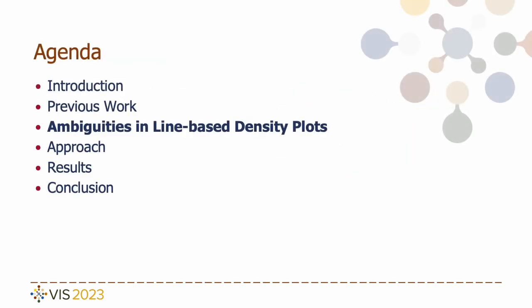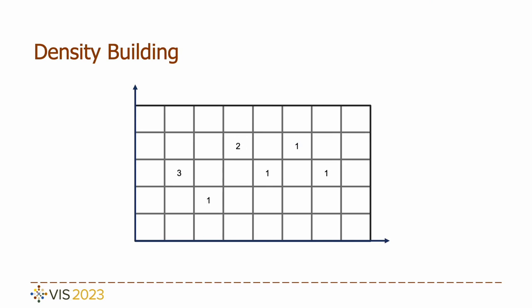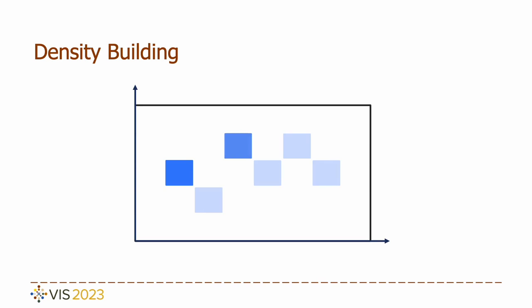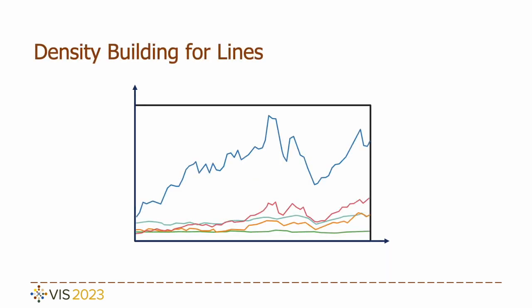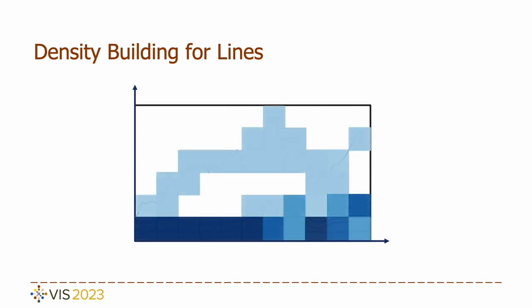Next, I will talk about the ambiguities in line-based density plots. Taking a scatter plot as an example, I will show the process of building density plots. First, we bin the plots and then count the number of points falling in each bin. After mapping the scalar values to colors, we get the density map for the scatter plot. For line plots, we take the same approach — the difference is that we count the number of lines touching each bin. Unlike a scatter plot where individual points are isolated, lines in line-based density plots connect different bins, implying potential relationships between them. However, the perception of continuous patterns in line-based density plots is influenced by the Gestalt principles, meaning the perceived pattern may not accurately reflect the underlying data.